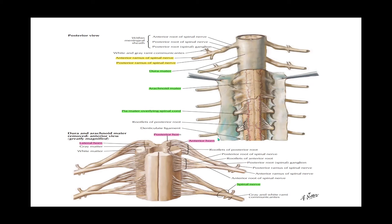We have rootlets — very small roots. Rootlets join to form roots, and roots join to form the rami. Posterior rootlets come together to form the posterior roots, and anterior rootlets join to form the anterior roots. The posterior and anterior roots join to form the ramus, which then divides into the posterior ramus — usually sensory — and the anterior ramus — usually motor.